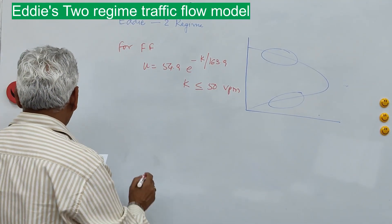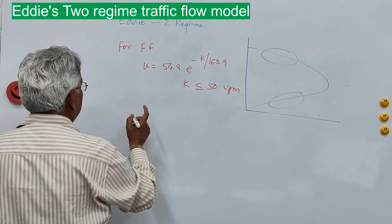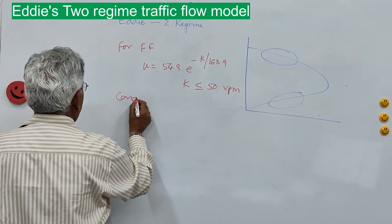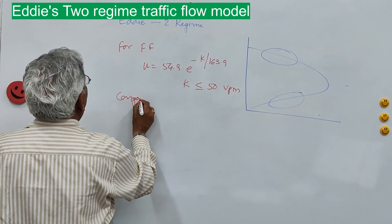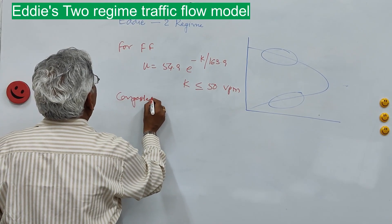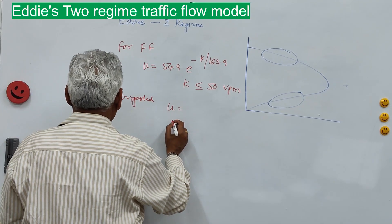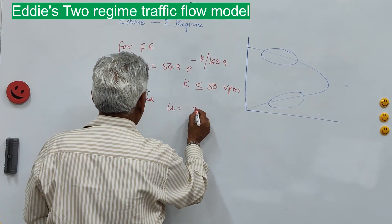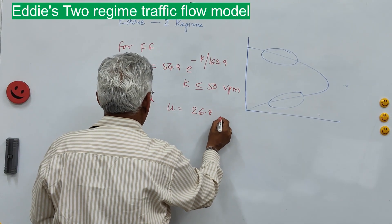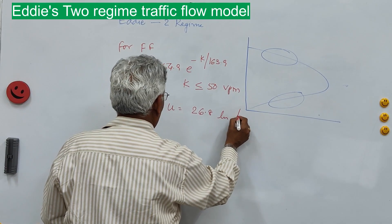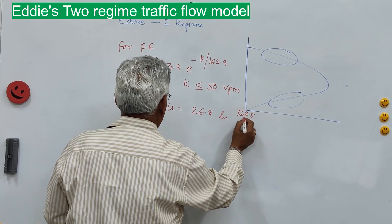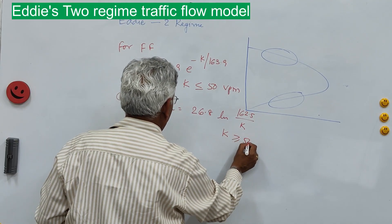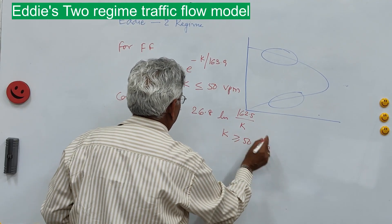When density is more than 50 vehicles per mile — congested flow conditions — there is another equation: u = 26.8 · ln(162.5 / k), for k greater than or equal to 50 vehicles per mile.